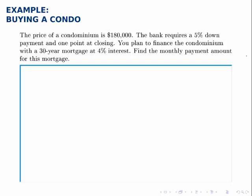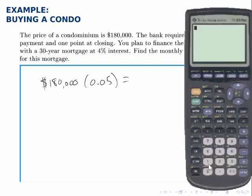Let's say you plan to finance this condo with a 30-year mortgage at 4% interest. Our ultimate goal is to find the monthly payment amount for this mortgage. The first thing we need to do is calculate the actual loan amount, because you're paying 5% today and the loan is the remaining 95%. So the down payment is 5% of $180,000, which is $180,000 times 0.05, or $9,000.